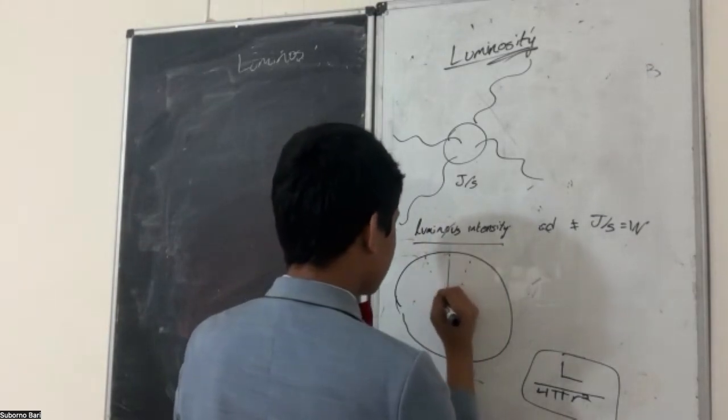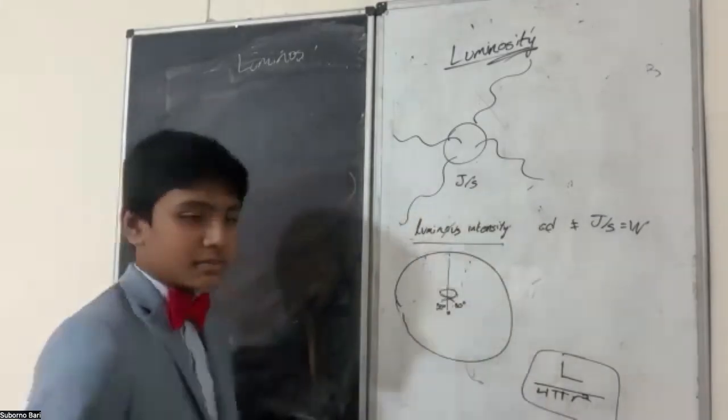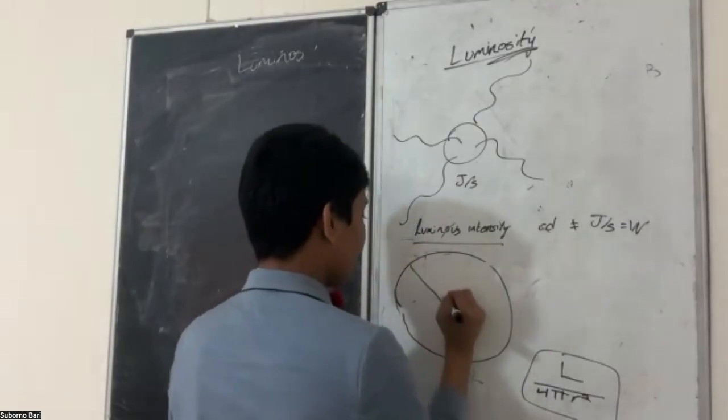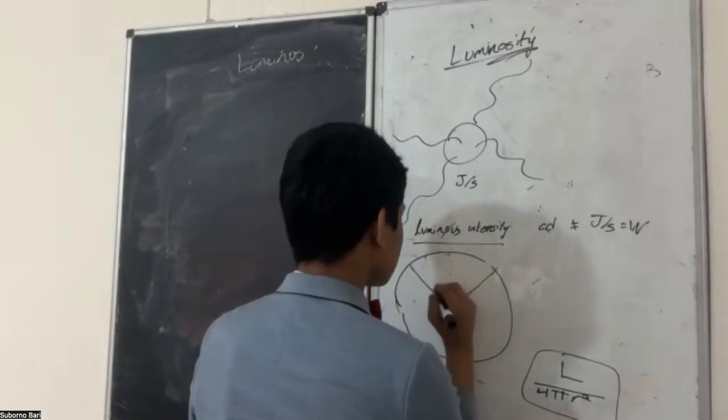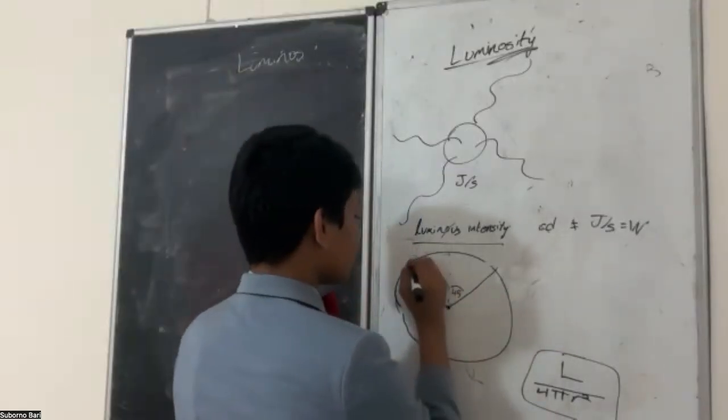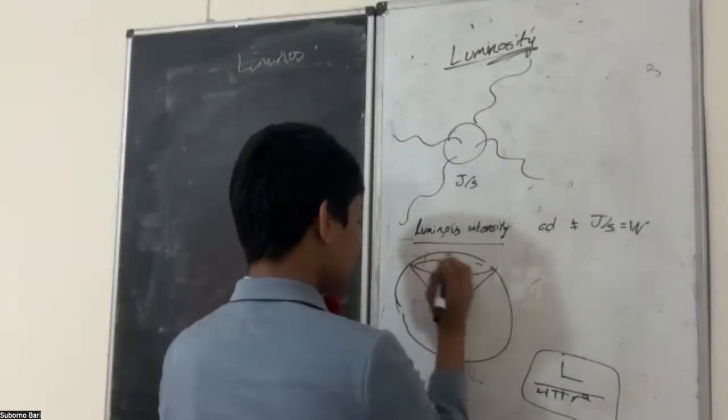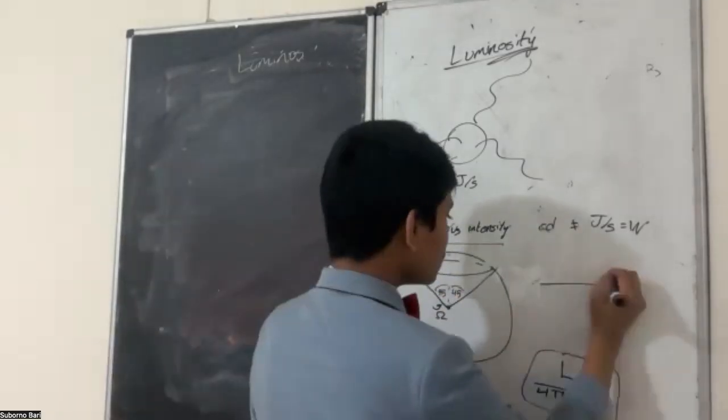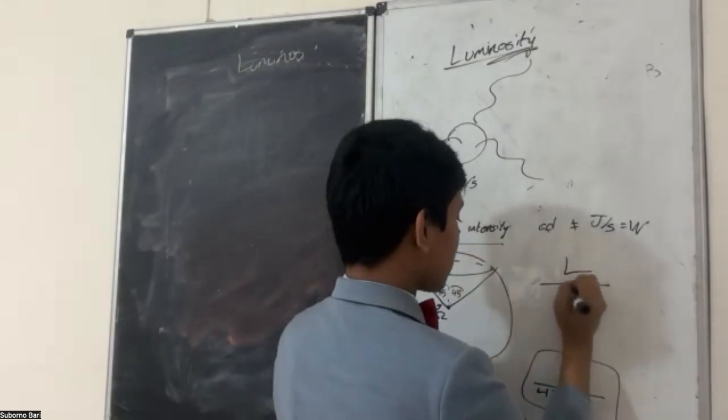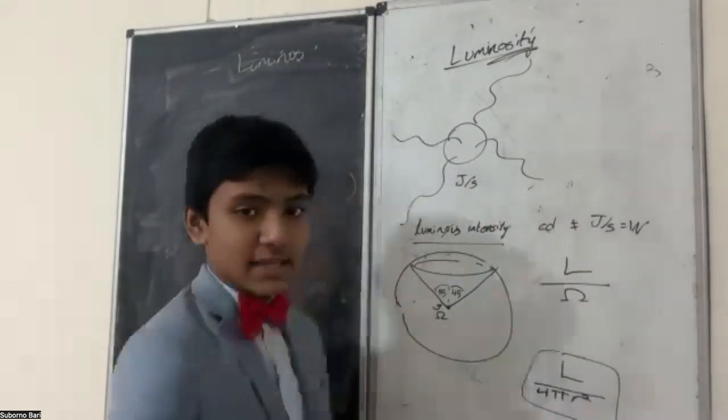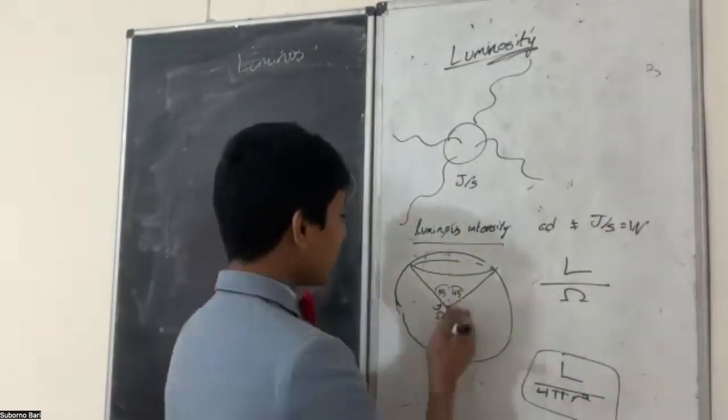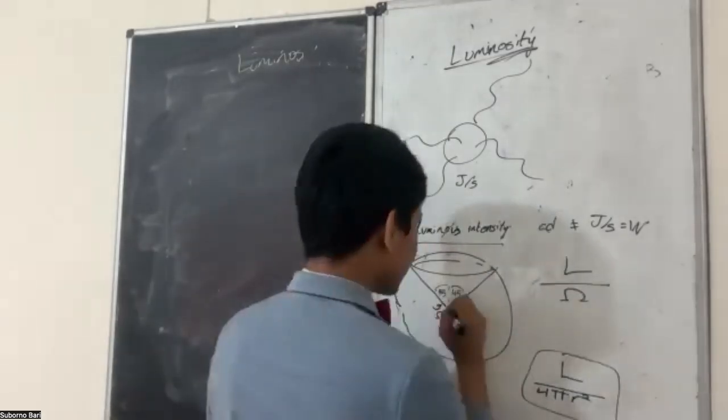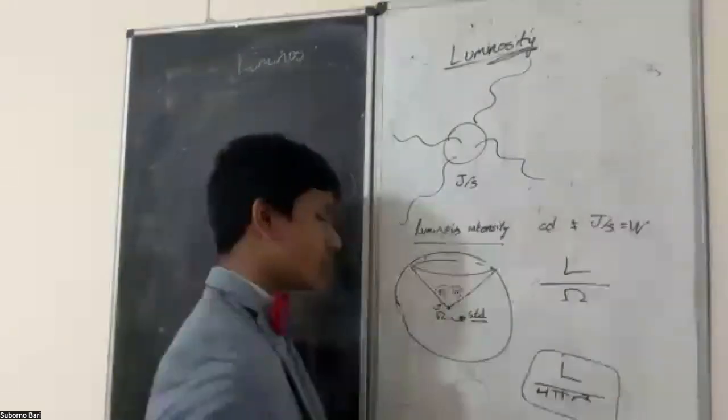Which means that, since your field of view is probably, let's say, 30 degrees left, 30 degrees right. Yes, that's not the normal human field of vision, but, you know, I'm making assumptions here. Let's make it 45 degrees left, 45 degrees right. Then, this angle right here is the solid angle. So, all luminous intensity is, is the light per solid angle, where solid angle is this thing over here.